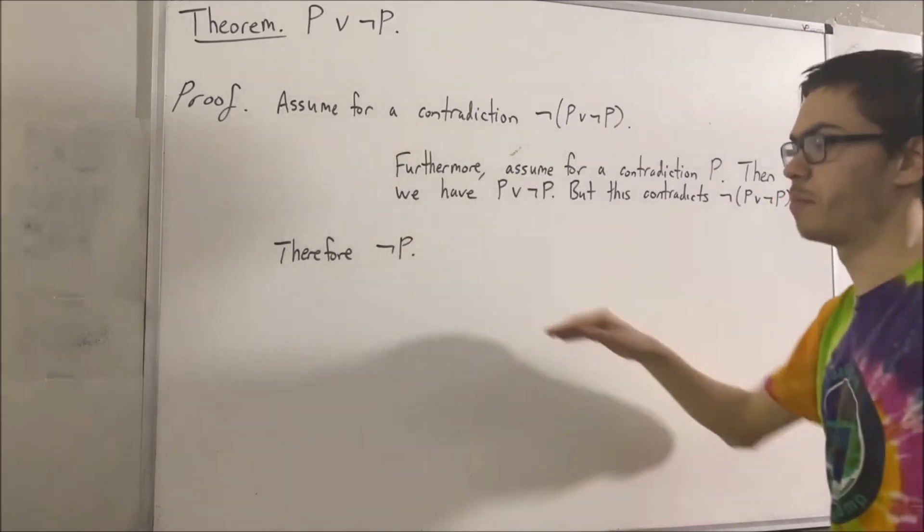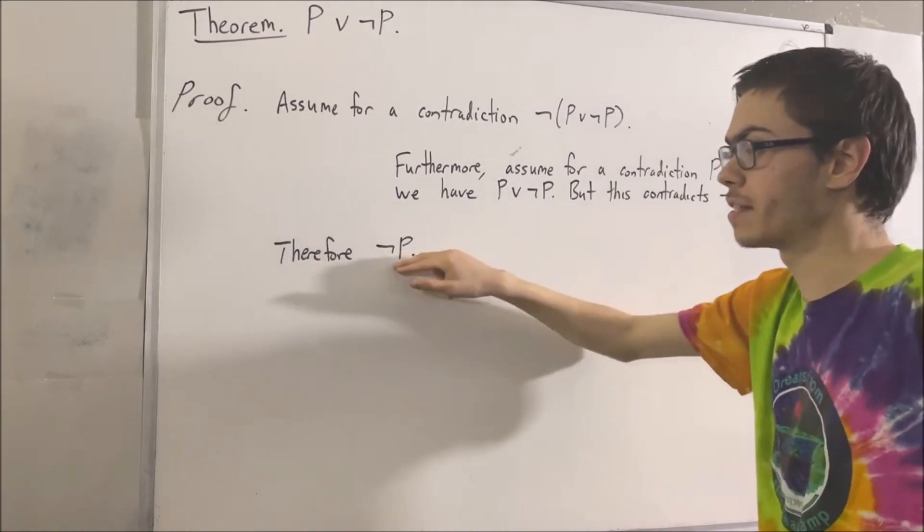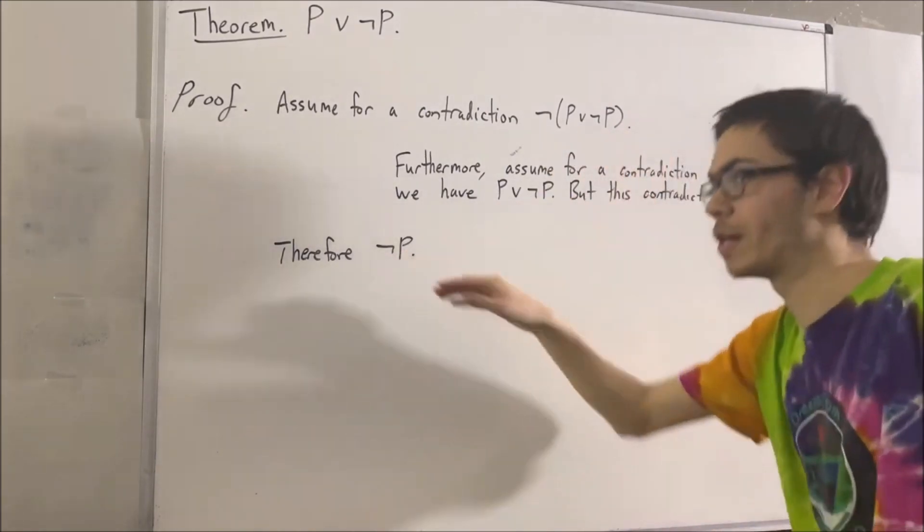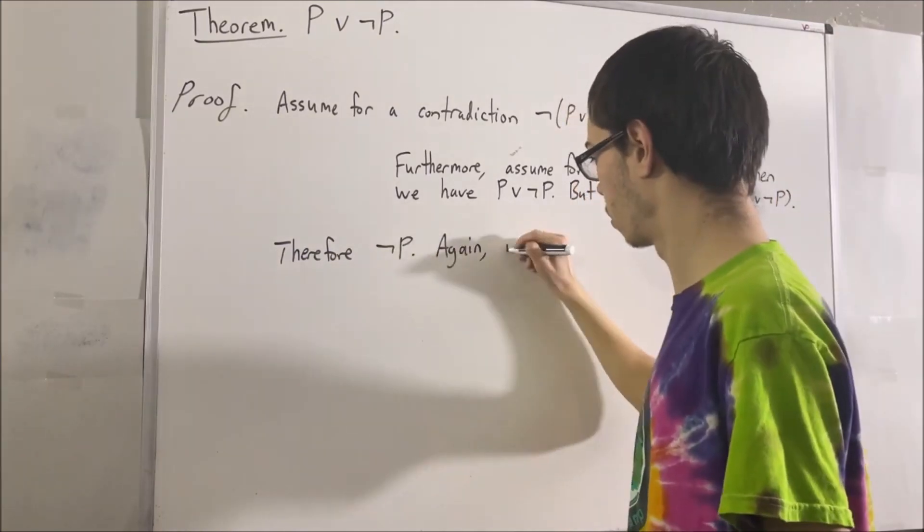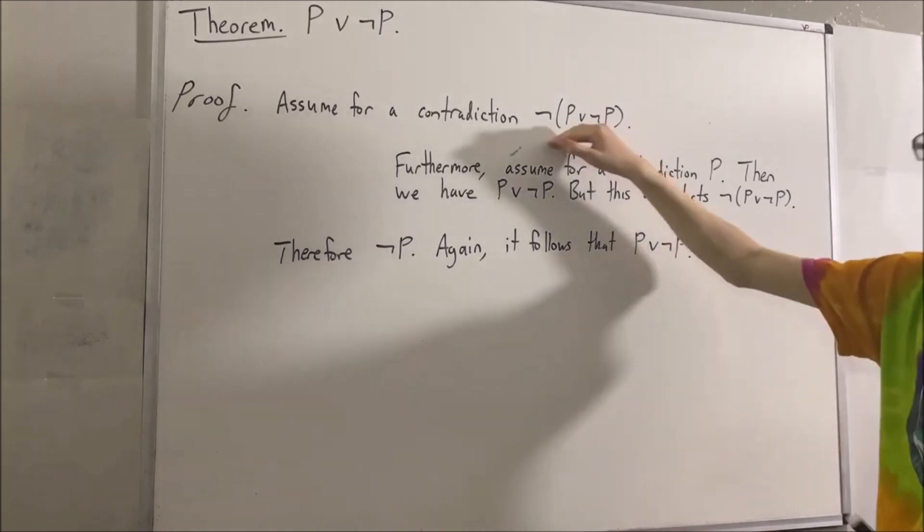But now, because not P is true, again, using our rules from disjunctions, we know that this implies P or not P is true, but this contradicts our assumption.